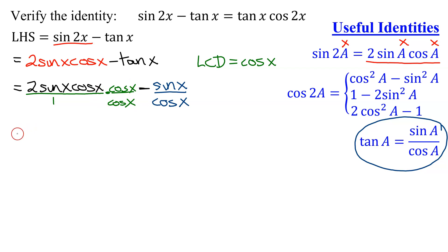So now, I have 2 sine x cosine x times cosine x. So that's 2 sine x, cosine x times cosine x is cosine squared x, minus sine x, all divided by my common denominator of cosine x.